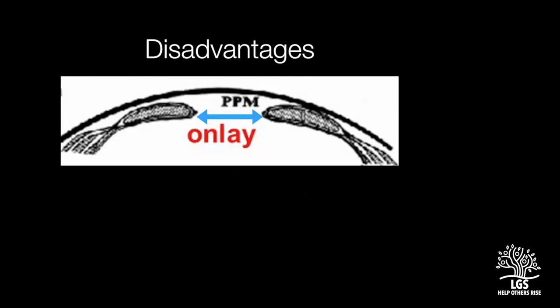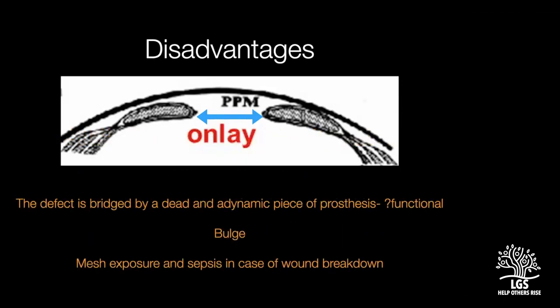The disadvantages of bridging repair are plenty. First, the gap is covered by a prosthesis — a dead, dynamic piece — that adds no function to the abdominal wall, making it an afunctional repair. Second, the mesh overlying the bowel and intra-abdominal contents will, with increased intra-abdominal pressure, lead to a bulge, also called pseudo-recurrence. Finally, if the wound breaks down, the mesh placed in the onlay aspect is directly exposed to the environment, leading to mesh sepsis and sometimes mesh explantation.